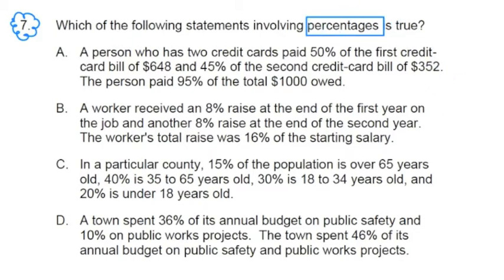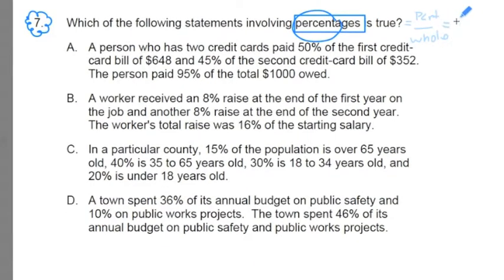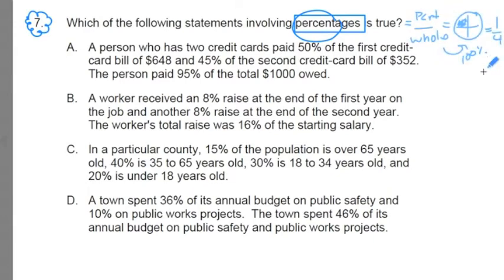When we think about percentages — percents — I want you to think about part-to-whole relationships. I'm going to write down here: part over whole. Keep this in mind as a good anchor. If I had my whole here, it always equals 100%. If I asked you what part of the whole is shaded, you'd say one-fourth, or 25% of the whole is shaded. We're going to use this as an anchor to think about percentages.